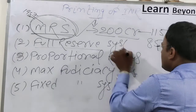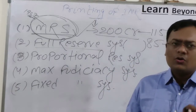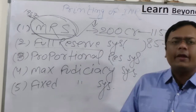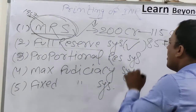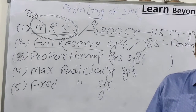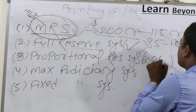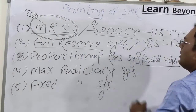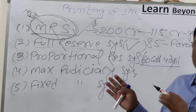The Full Reserve System means that to print any amount of currency, 100% equivalent gold must be kept in reserve first — then currency is printed. The Proportional Reserve System means maintaining reserves in a proportion — for example, to print 100 rupees, keep 60% in gold and 40% in silver reserves — and then issue liquidity based on that ratio.